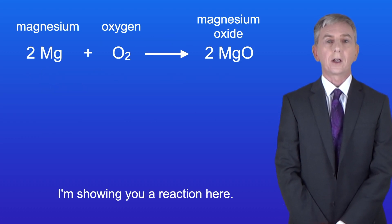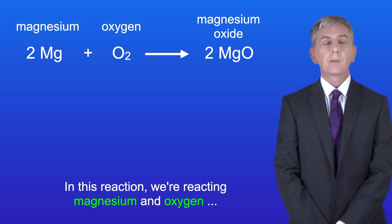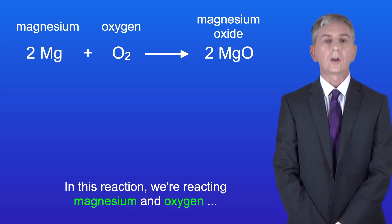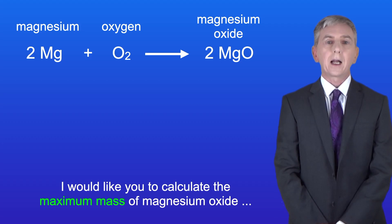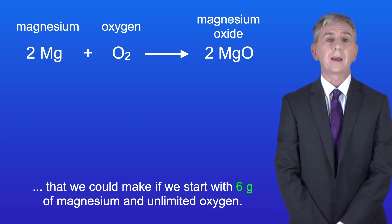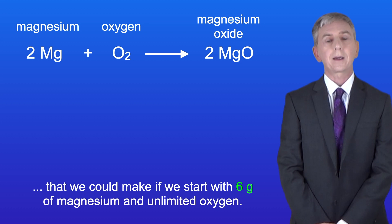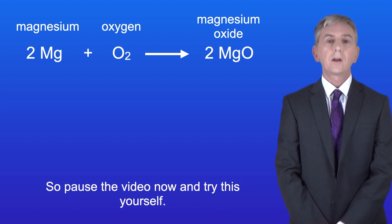I'm showing you a reaction here. In this reaction we're reacting magnesium and oxygen to make magnesium oxide. I'd like you to calculate the maximum mass of magnesium oxide that we could make if we start with 6 grams of magnesium and unlimited oxygen. Pause the video now and try this yourself.